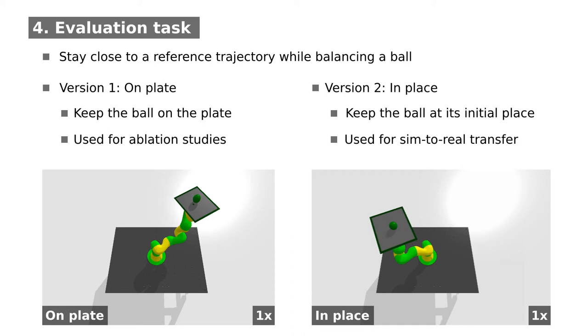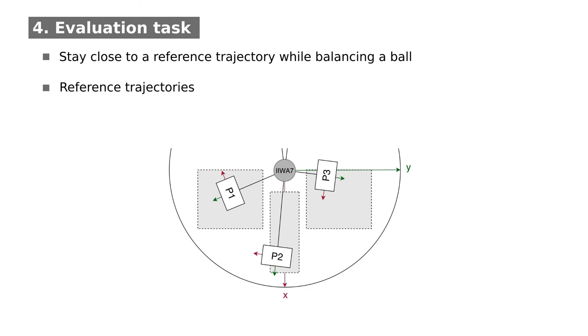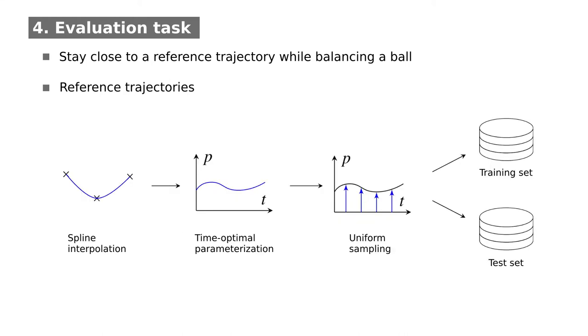In both cases, seven robot joints are controlled. To generate reference trajectories, three board positions are sampled at random and connected via spline interpolation. The resulting Cartesian path is transferred to joint space and parameterized in a time-optimal way.